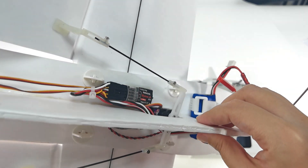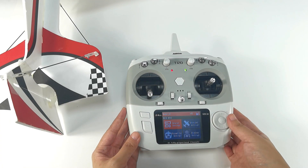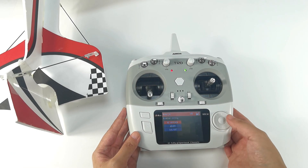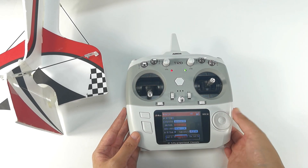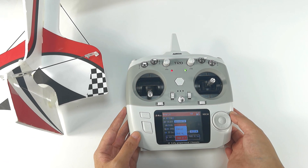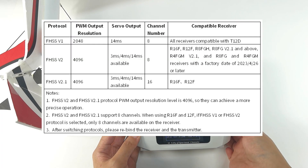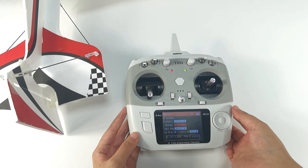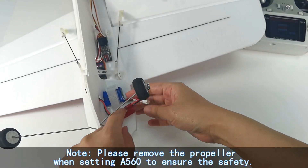Now bind the receiver to the transmitter. Power on the T12D and enter receiver settings, then RF settings, then Protocol. The R8XM supports FHSS V1 protocol, so select V1 protocol here. You can refer to the chart on screen to set the correct protocol for your receiver. Then connect the battery to the A560, making sure the polarity is not reversed.